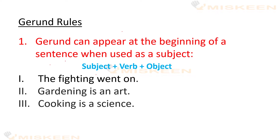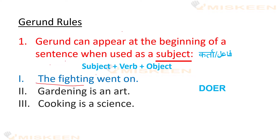Harit jumla is form me bantah hai: Subject, work or object. Subject joh karne wala hai, work joh action hai, object jis par kama ho raha hai. Subject ko hum doer bhi kahti hai. Pehla sentence: The fighting went on. Yehaan par subject kya hai? Ladaai chal raha hai — yehaan par 'the fighting' chalrenn ka kama kar raha hai.